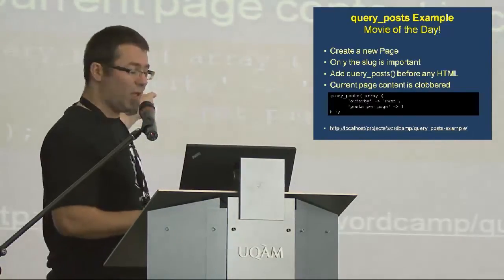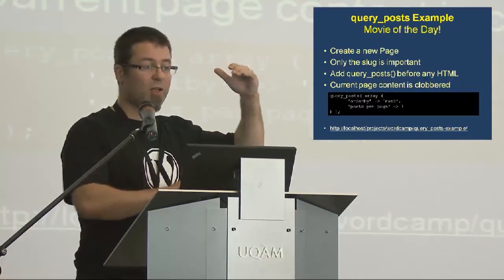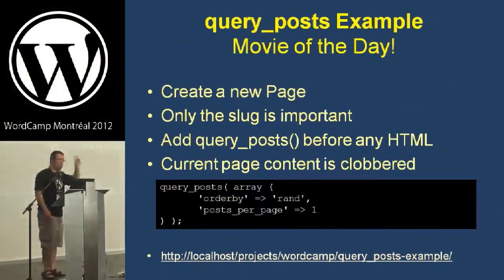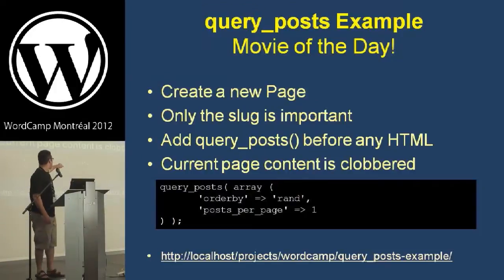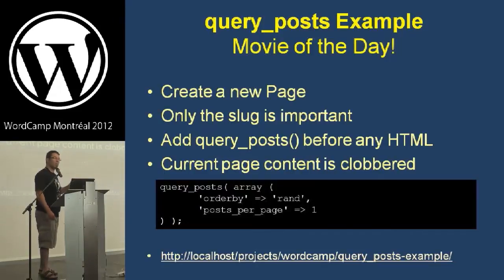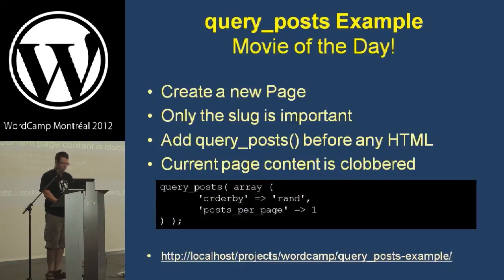Here is a very simple example. At the top of the page after the opening PHP tag, I call query_posts() with an array: 'orderby' set to 'rand' — that sets the sort order to random — and 'posts_per_page' set to 1, which displays just one post. That would show a random video from the database.